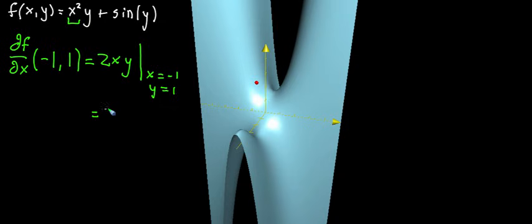So when we actually plug that in, it'll be 2 times negative 1 multiplied by 1, which is 2, negative 2, excuse me.